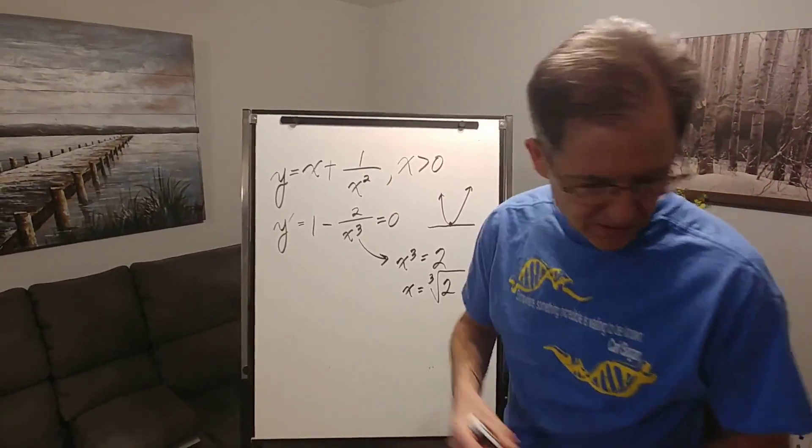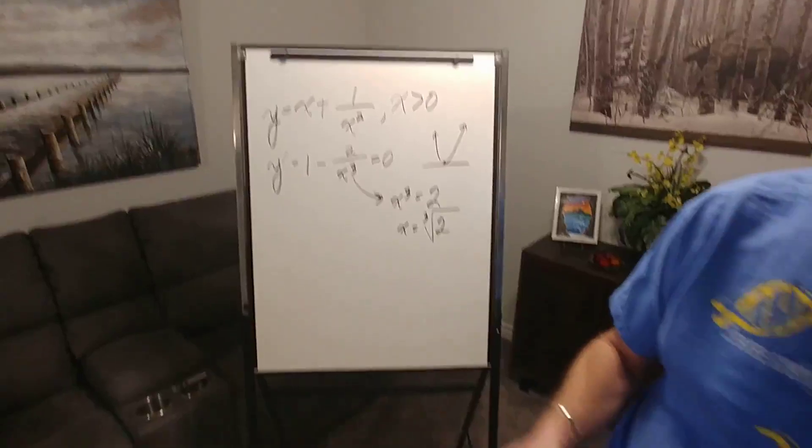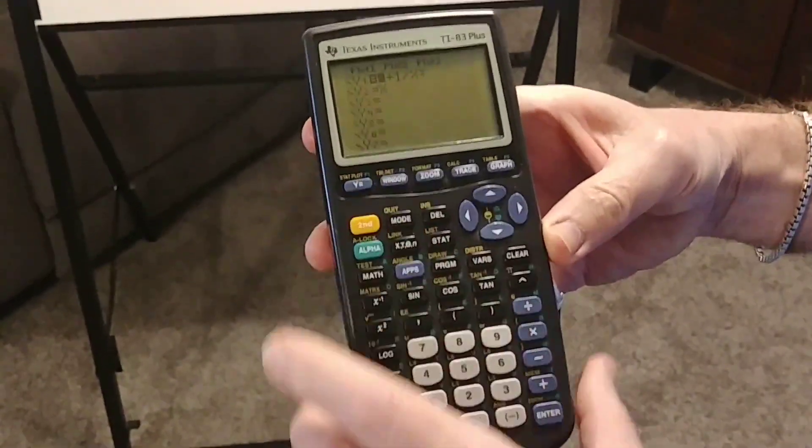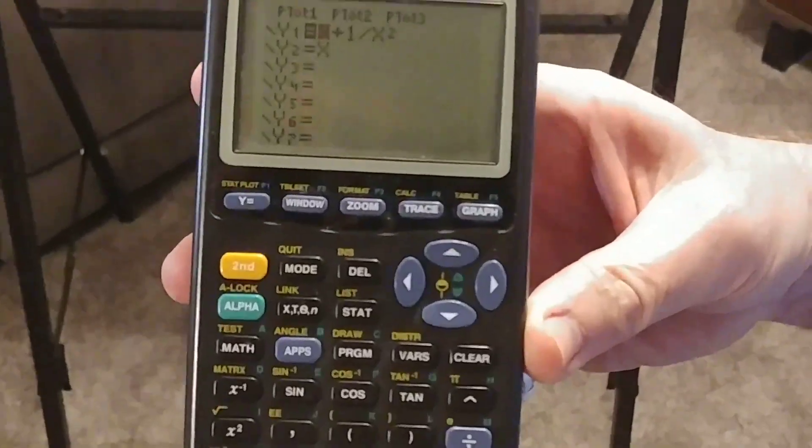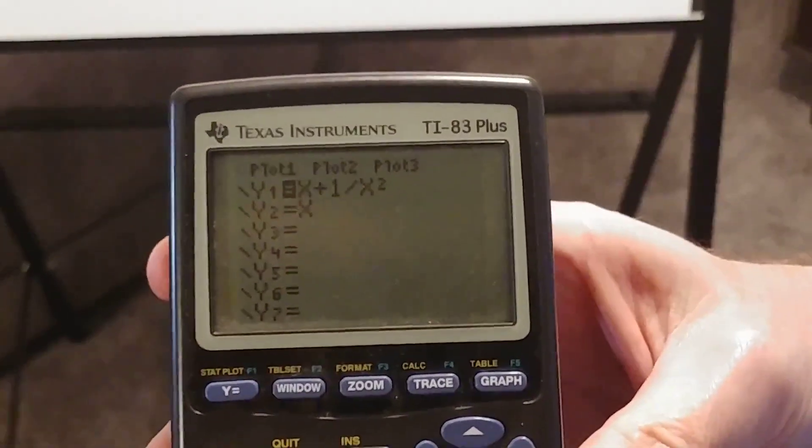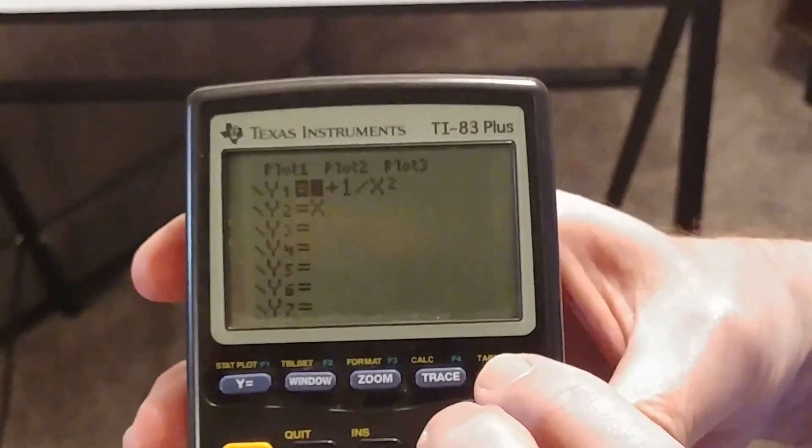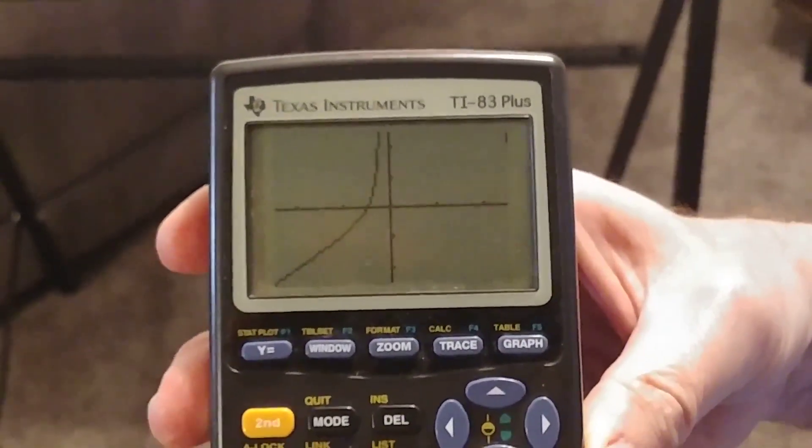In fact let's look at this function on a graphing calculator. You can see I've typed in x plus 1 over x squared and if I graph that I get this curve right there.